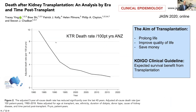Our practice over recent decades from the 80s through to 2020 shows that steadily we've been able to reduce the incidence of death with a functioning graft after transplantation, which is good. The aim of transplantation is to prolong life with prolonged graft function, improve quality of life, and save money. This demonstrates that over recent eras we've improved our capacity to prolong life, and good candidate selection is a strong part of that.